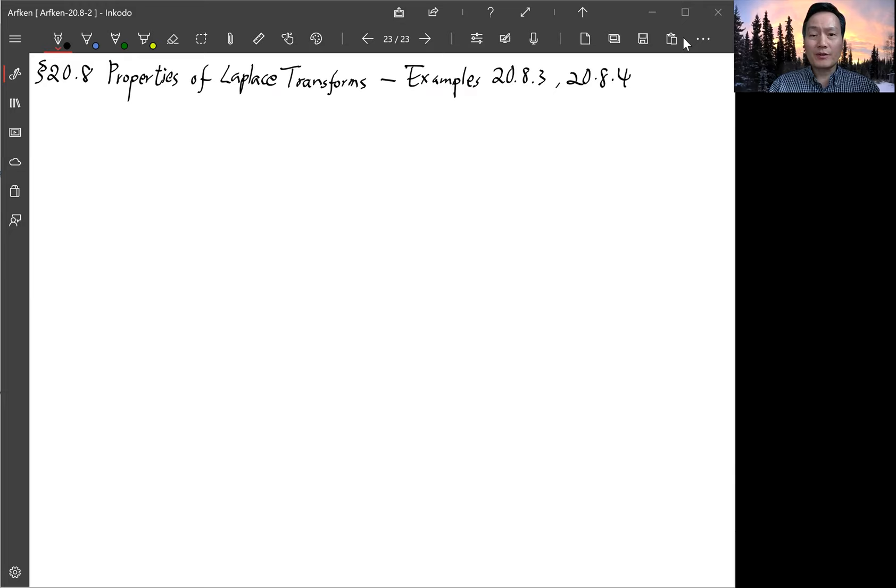And we continue with another two examples to use that to solve differential equations. So the first one is basically still a simple harmonic oscillator but is written in two first order ODEs. This is example 20.8.3.